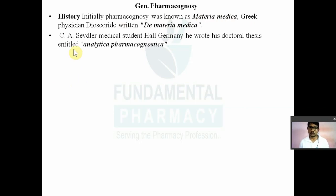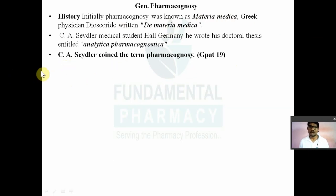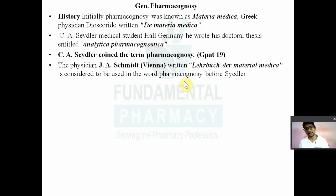There was a PhD student known as C.S. Seydler, a student of Medical Hall, Germany. He wrote his doctoral thesis entitled Analytical Pharmacognosy. This analytical pharmacognosy was the PhD thesis of C.S. Seydler, and he is considered to have coined the term pharmacognosy. Remember: C.S. Seydler coined the term pharmacognosy — this was a question in GPAT 2019. Before C.S. Seydler, there was another physician known as J.A. Schmidt from Vienna.